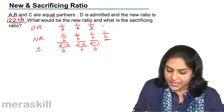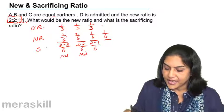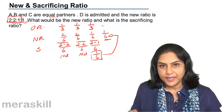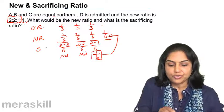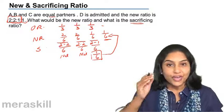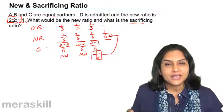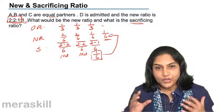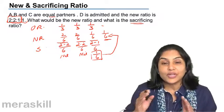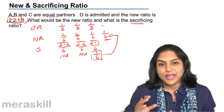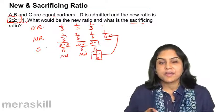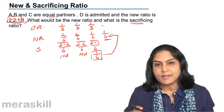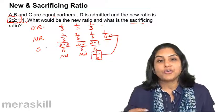So the sacrifice by A is nil, the sacrifice by B is nil, and C has sacrificed one-sixth, which has been gained by D. The new ratio is 2:2:1:1 and the entire sacrifice has been made by C. Therefore, if there is any adjustment with respect to goodwill or revaluation of assets and liabilities, only C needs to be compensated for any gains. A and B will continue to get the same share of profit and need no further compensation.